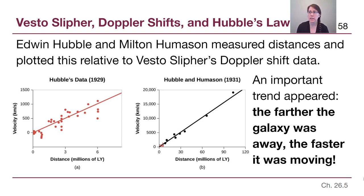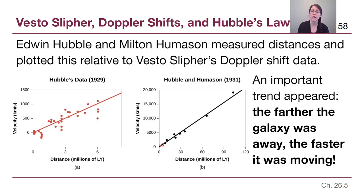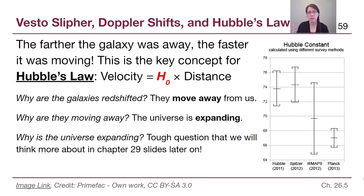If you've ever learned about the equation for a line — y equals mx plus b — this will sound familiar. In this case, because the line goes through zero-zero, there's no y-intercept: if something is zero distance away from us, it is also not moving away. So the equation for the trend line is velocity equals H-naught times distance, where H-naught is called the Hubble constant.